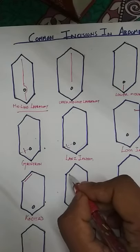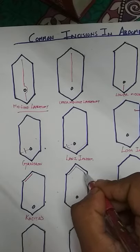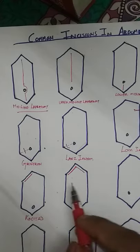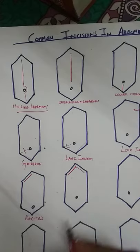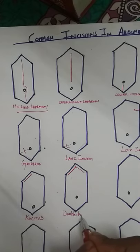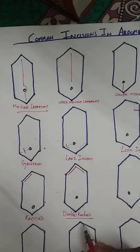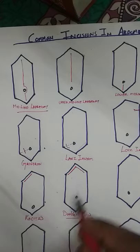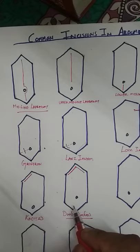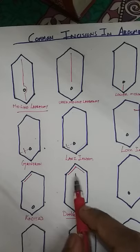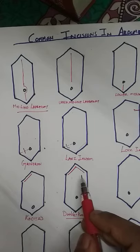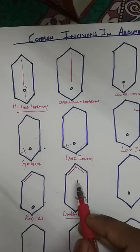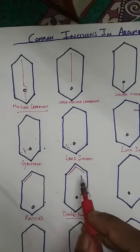The next incision is called the double Kocher's incision — D-O-U-B-L-E K-O-C-H-E-R apostrophe S. It consists of two similar lines resembling the Kocher's incision and is also called the rooftop incision because it resembles the top of a roof. This incision is used for pancreatic surgery, radical gastric surgery, and hepatic surgeries such as hemi-hepatectomy, making it applicable to a wide spectrum of surgical procedures.